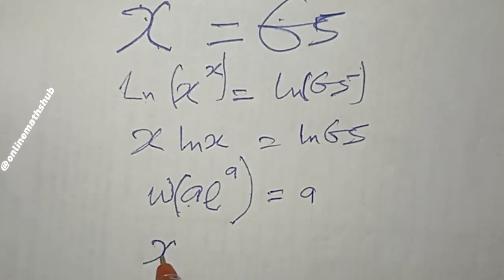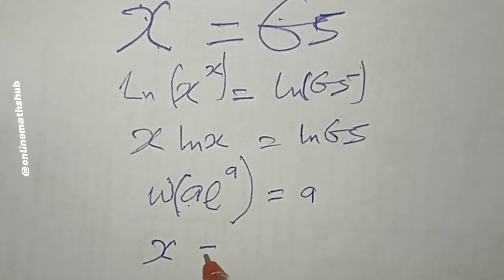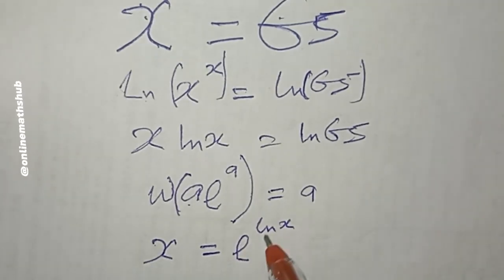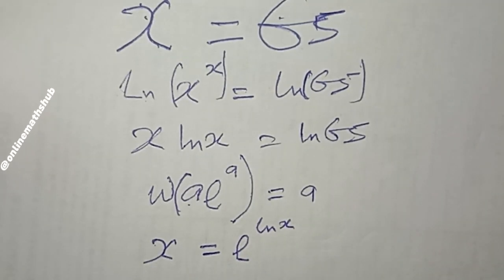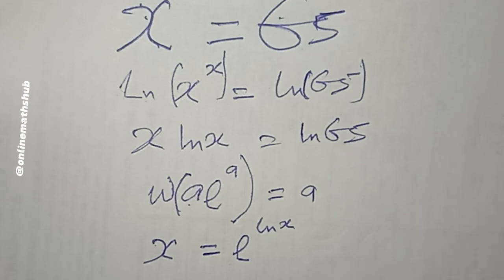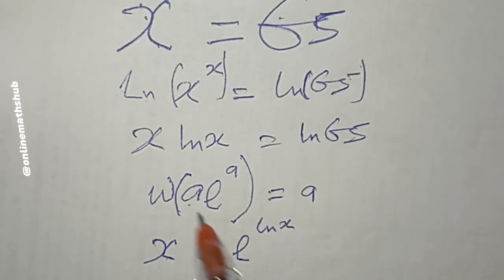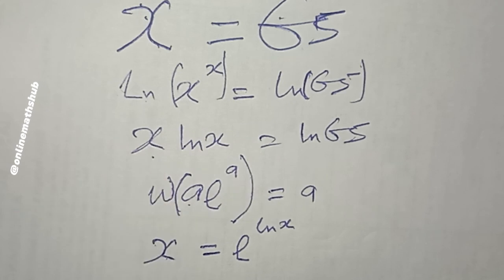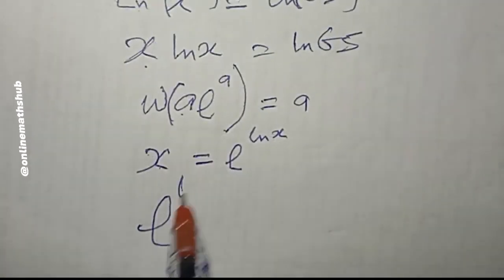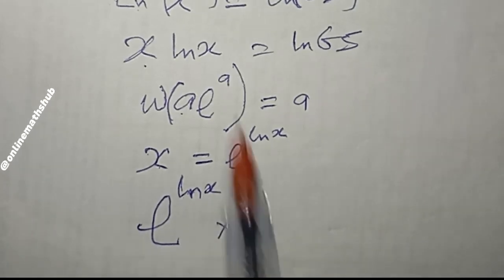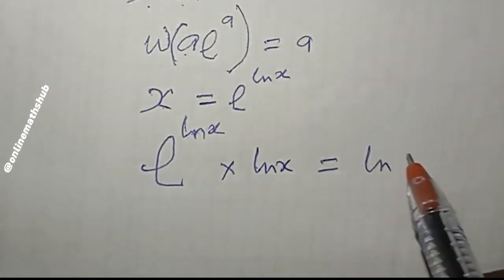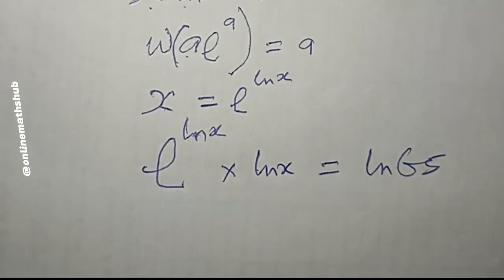To do that, remember that you can write x as e^(ln x), since e^(ln x) equals 1 times x, which equals x. So I replace x with e^(ln x), and my equation becomes: e^(ln x) · ln(x) = ln(65).